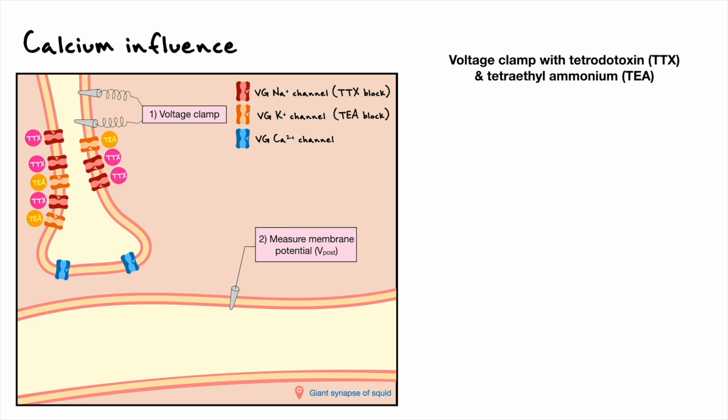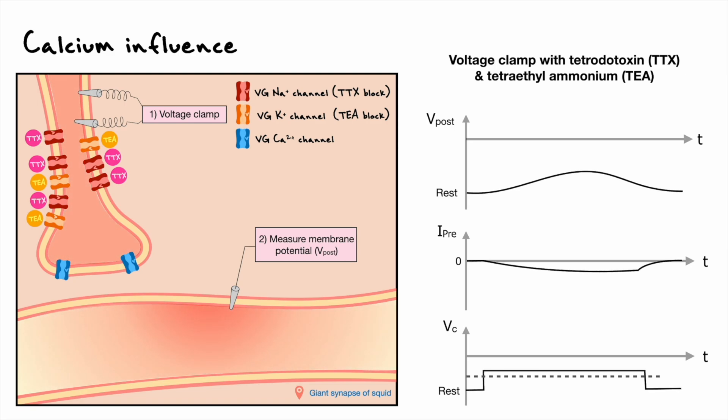They also placed an electrode in the postsynaptic cell to record the voltage there. In terms of the recordings, we have three plots. We first have a plot for the command voltage, one for the current in the presynaptic cell, and finally a plot for the postsynaptic potential. All of them are as a function of time. When the presynaptic cell is clamped above threshold, the recordings show an inward calcium current in the presynaptic cell and a rising postsynaptic potential. At higher command potentials, the responses elicited in the postsynaptic cell were bigger.